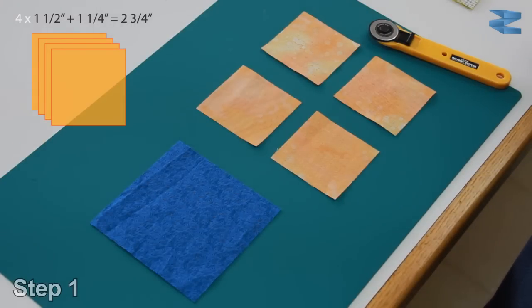One way to remember these calculations is that the large square adds to the larger amount, 1.5 inches, and the 4 smaller squares add the smaller amount, 1.25 inches.